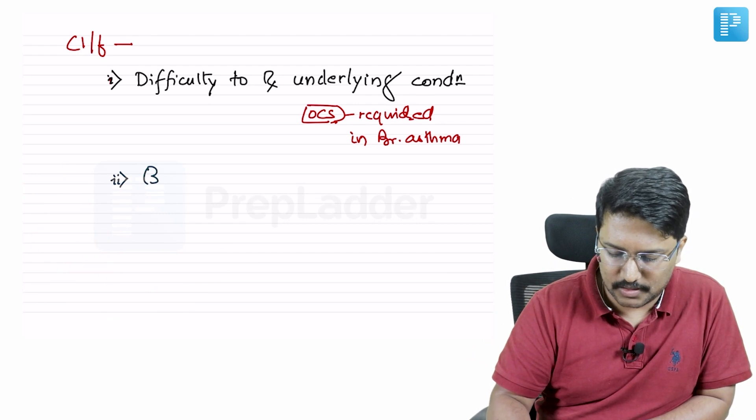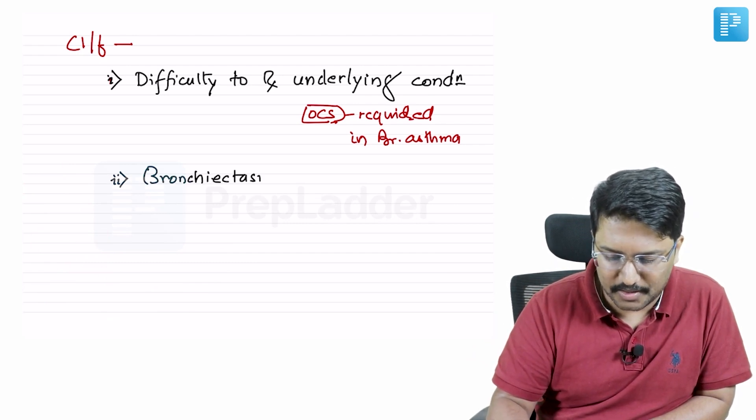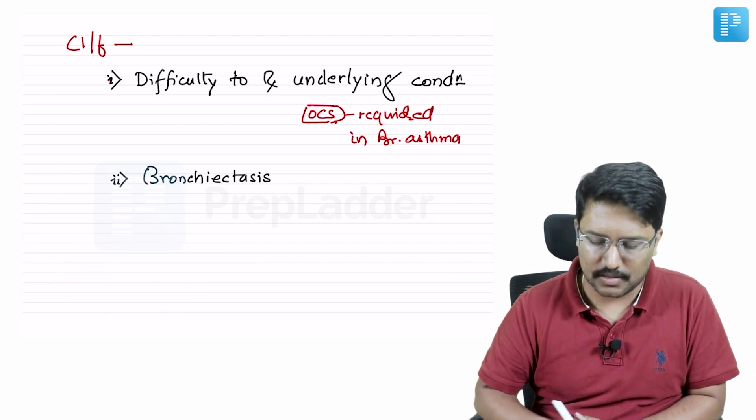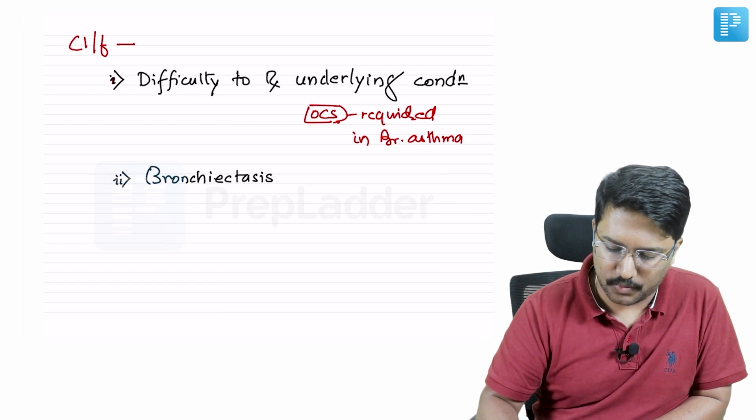Bronchiectasis is one more manifestation you need to keep in mind. If you see an asthmatic who is not well controlled and having some bronchiectasis, that may be a pointer towards allergic bronchopulmonary aspergillosis.